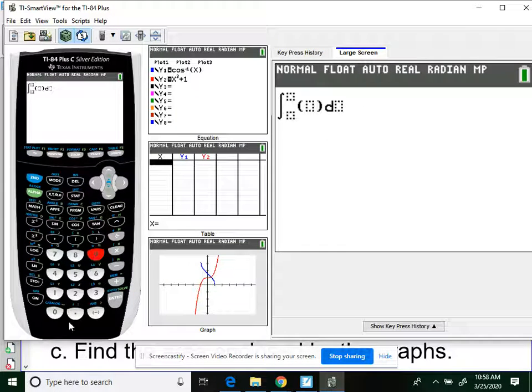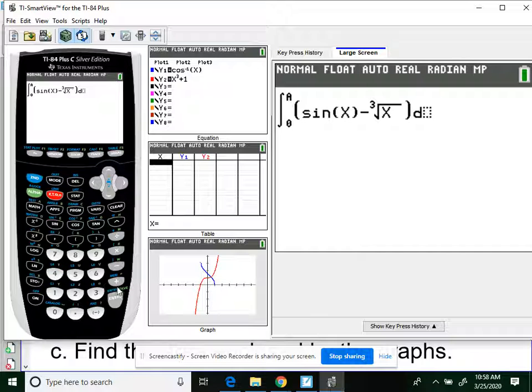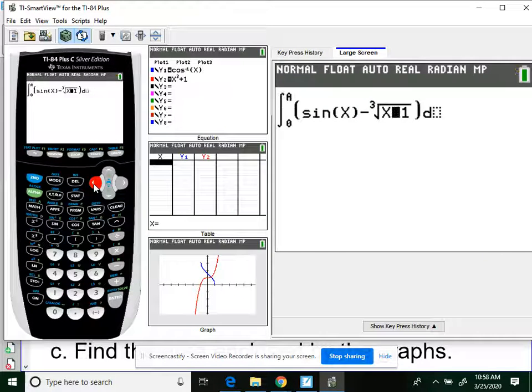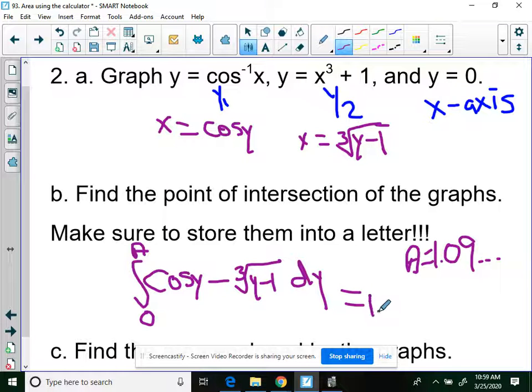So math 9, 0 to A, sine, now we don't have an x, we're going to put x even though it's a y, minus the cubed root x plus 1, is it plus 1, minus 1, minus 1. You can see it working at the top here. Some of these areas, it takes the calculator a little bit of time to figure it out.